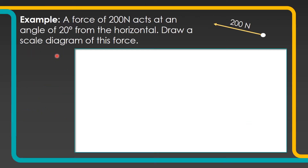We're going to have a look at an example and have a go at it. It says a force of 200 newtons acts at an angle of 20 degrees from the horizontal, and we have to draw a scale diagram of that force. There's a little example of what that should look like — it's 200 newtons going to the left, 20 degrees above the horizontal.